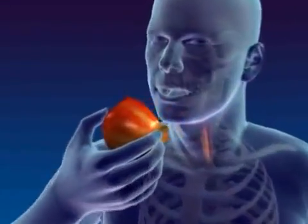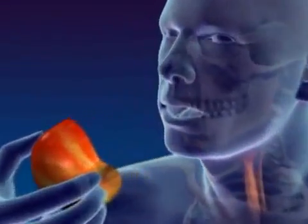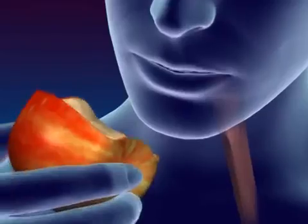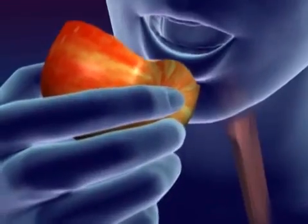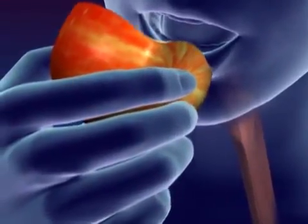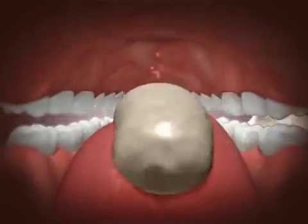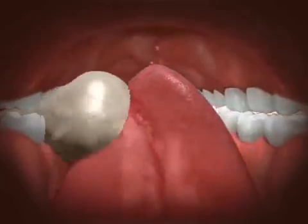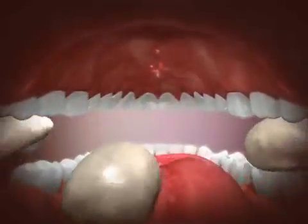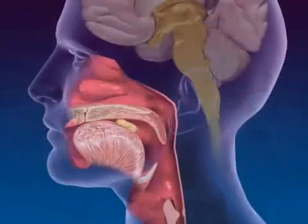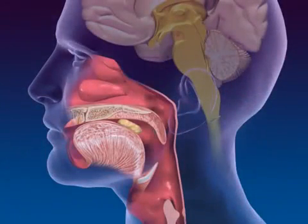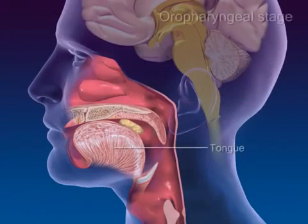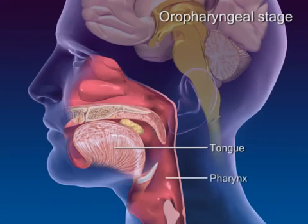Swallowing occurs in two stages, the oropharyngeal and esophageal stages. At the start of a swallow, a food bolus is voluntarily pressed by the tongue up against the roof of the mouth and backwards towards the pharynx.